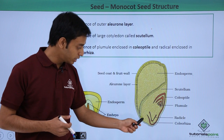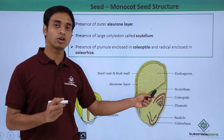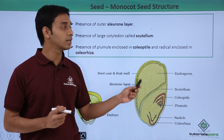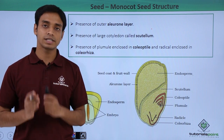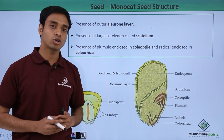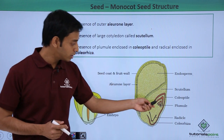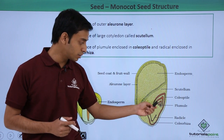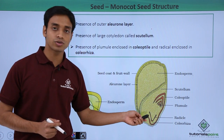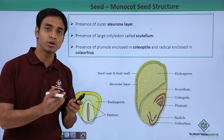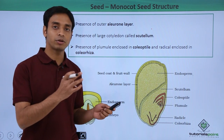As you can see, there is a large cotyledonous structure known as the scutellum. This is the cotyledon, and there is only a single cotyledon, which is why these seeds are known as monocotyledonous seeds or monocot seeds. They also have the presence of a plumule and a radicle.